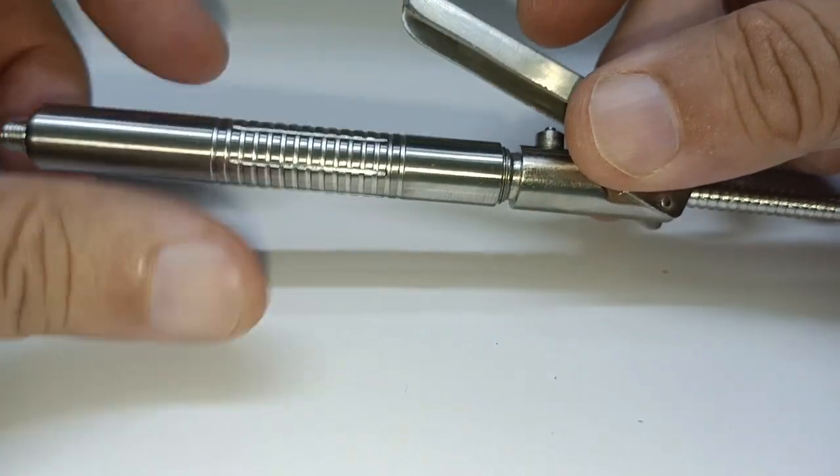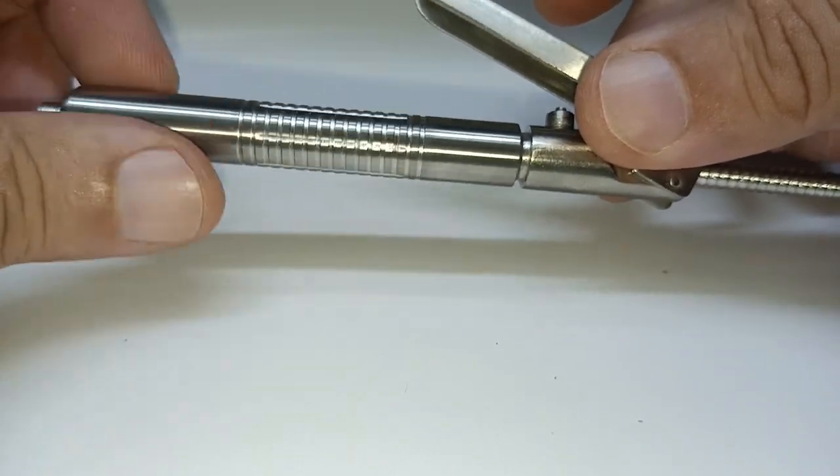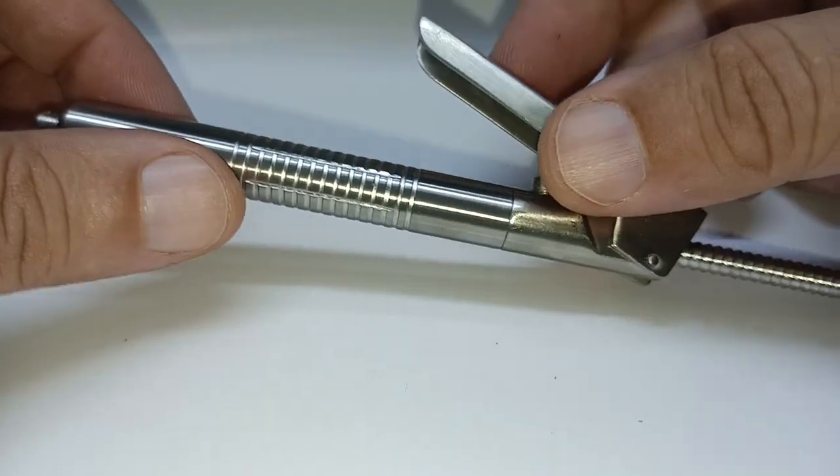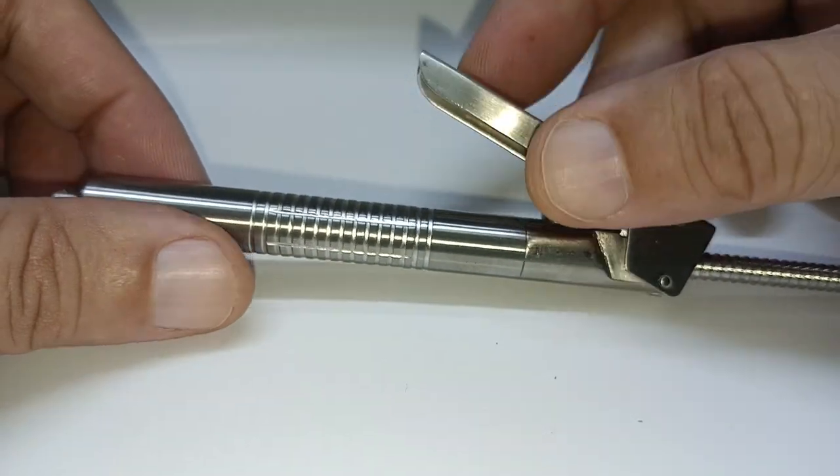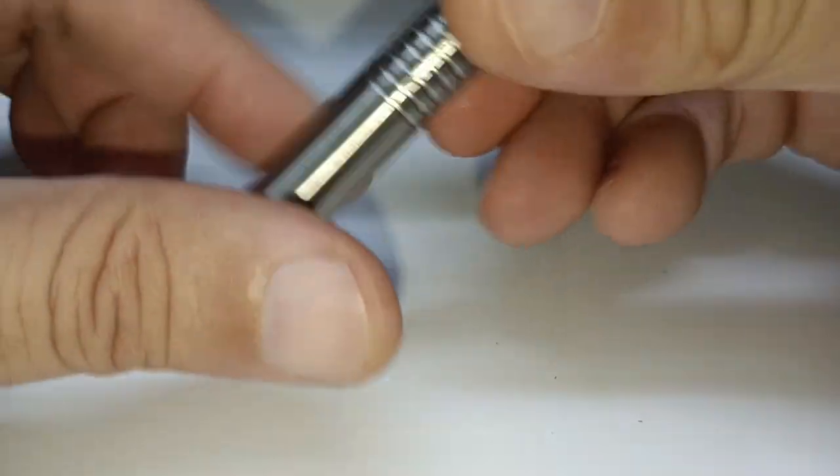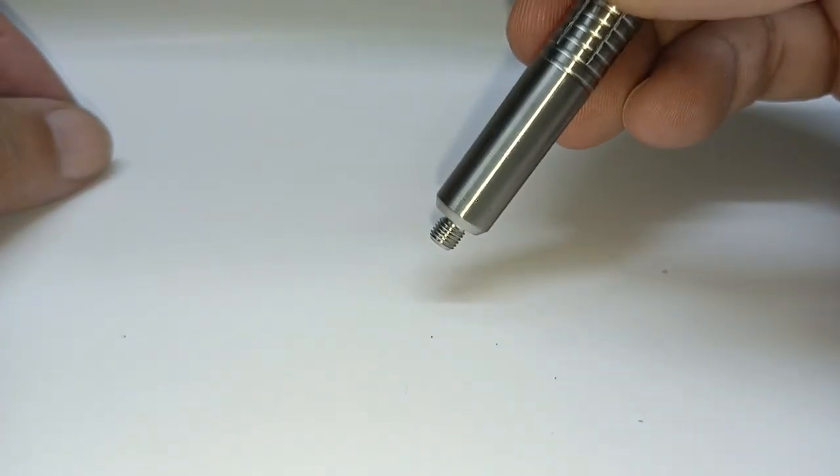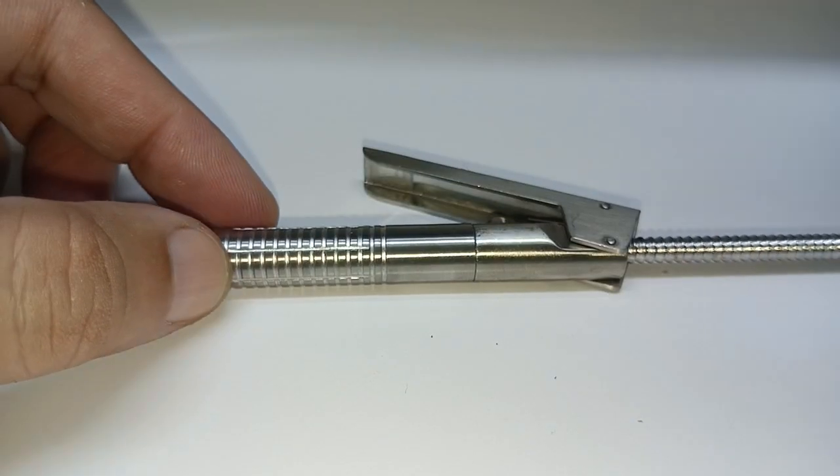In certain cases we have talked about that you would need to give the anesthetic intrapulpally. In those instances also you can use the same ligmaject, and you should be able to deliver the anesthetic holding it nicely like this, straight into the pulp chamber if you have modified the needle. Hope that helps.